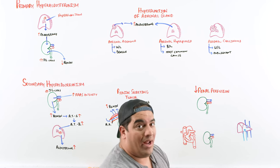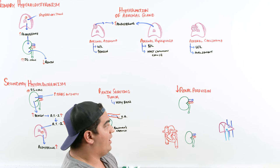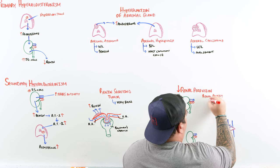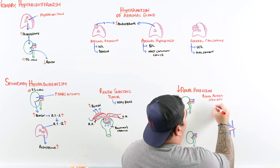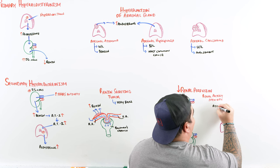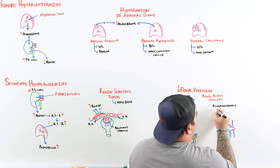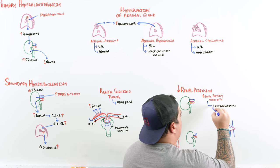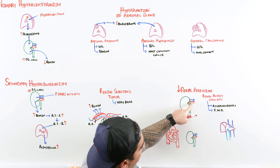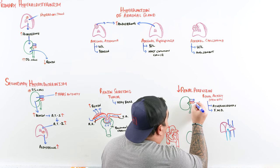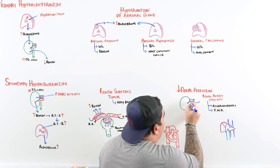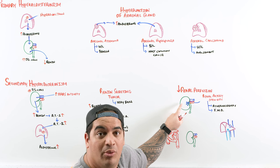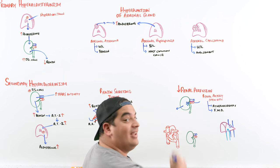By far more common are three particular causes that lead to increased renin and subsequently increased aldosterone. One is renal artery stenosis, which has two causes: atherosclerosis, where plaques build up within the wall of the renal artery, and fibromuscular dysplasia, which is common in 20 to 30 year old women. In both, the renal artery lumen is narrowed, making it hard to get enough blood through to the glomerulus. The end result is reduced perfusion to the glomerulus, and with poor renal perfusion comes increased renin levels as the body tries to raise blood pressure.